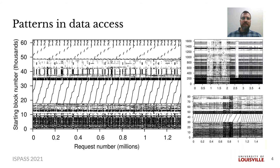First, motivation. I want to point out that patterns in data access exist. These are plots of data requests from publicly available storage traces for various application servers. Vertical patterns indicate data access correlations when various blocks are accessed more or less at the same time. These correlations can arise from semantic relationships within an application or between applications, such as a website or a database. Their causes may also be hidden from applications altogether, such as a file system inode and its associated data blocks.